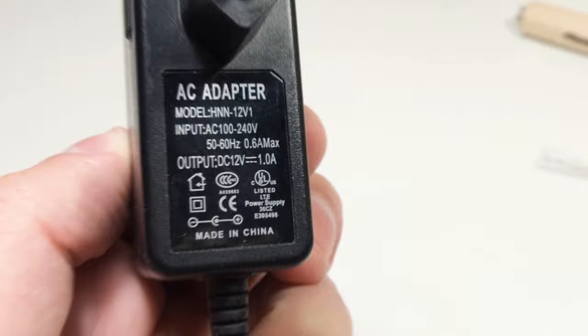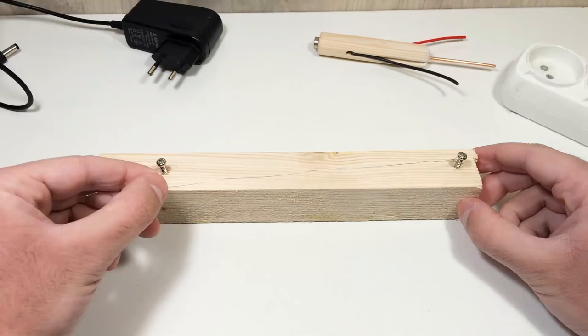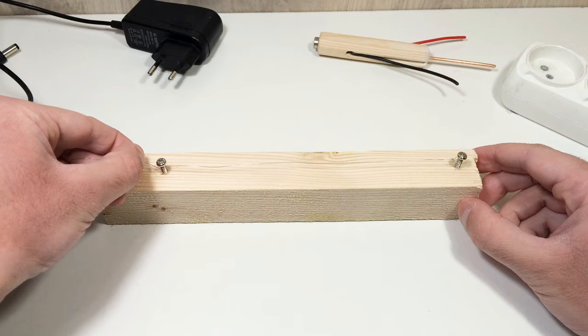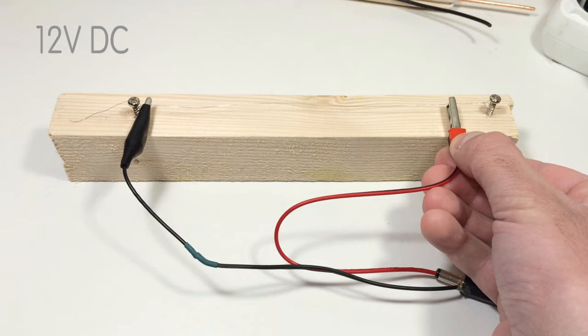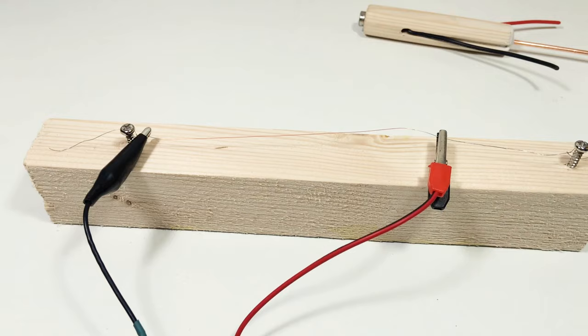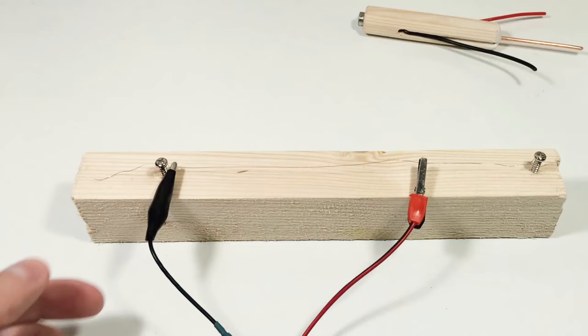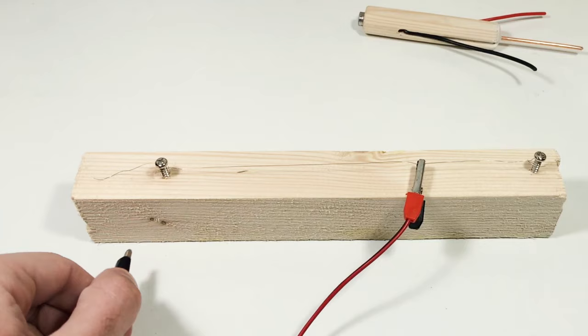First, empirically determine the necessary length of the nichrome wire. To do this, we fix the wire on the experimental stand. Rearranging the electrical contact until the wire warms up to red, and thereby determine the desired length of the nichrome wire.